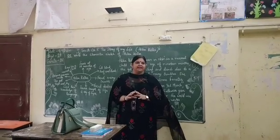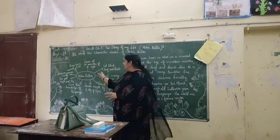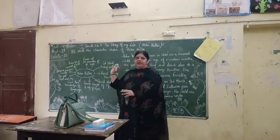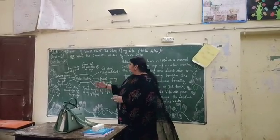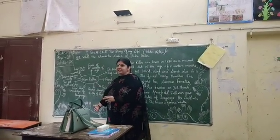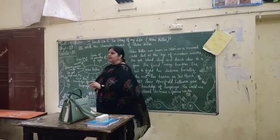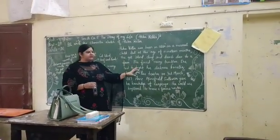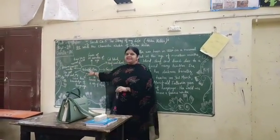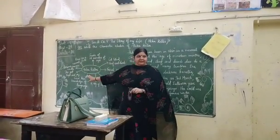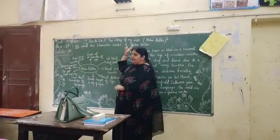Now we will go through the character sketch of Helen Keller. With the help of a mind map and write-up, we will know about the writer. This is the central character of the story; the chapter is 'The Story of My Life.'